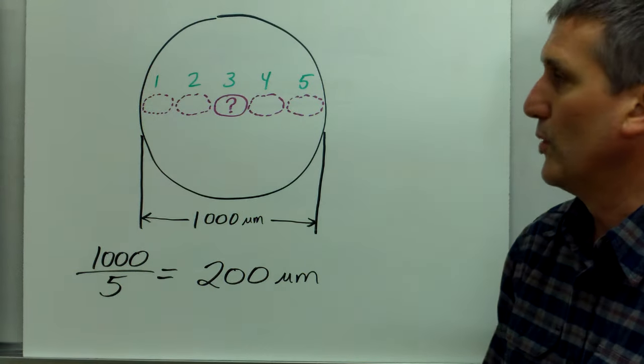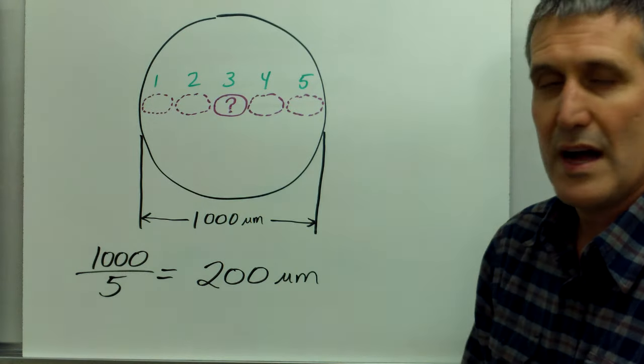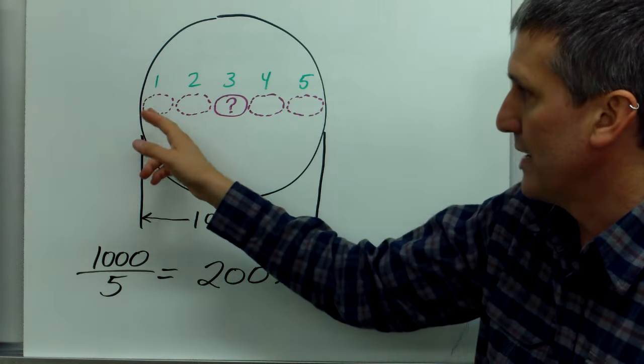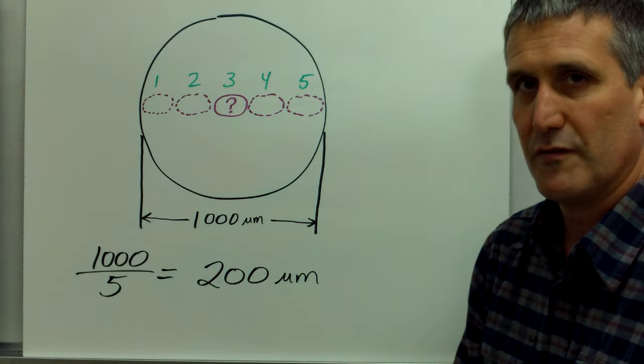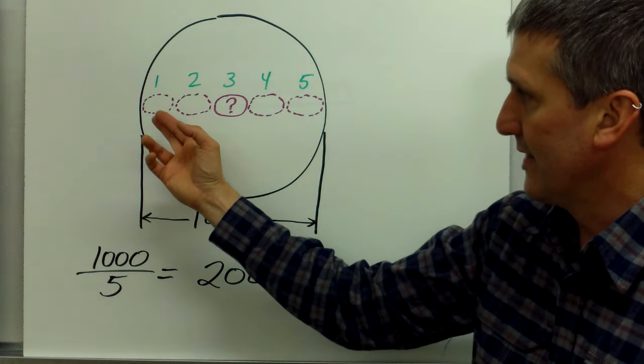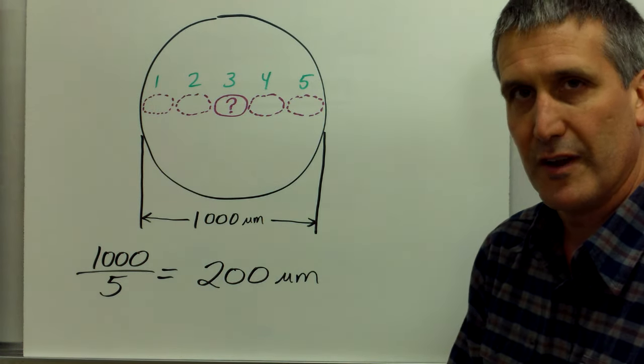So here's one more quick example. If you wanted to know how big that cell was in the middle, you would try to mentally picture and estimate how many of those cells would fit across the diameter. And in this case it looks like 5, about 5 would fit.